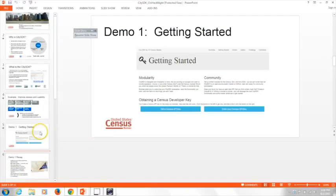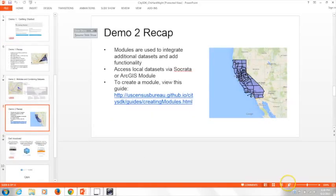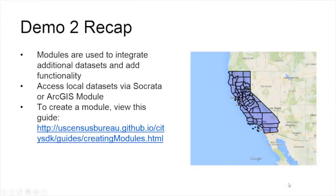Back to the slides for a quick recap. We looked at how you can use modules to integrate additional datasets into your project. If you're interested in local data, you can use the Socrata or ArcGIS modules provided. Or if you want to build your own module — which we invite you to do — you can look at the guide explaining how to create one. Once you build it, submit a pull request to the project and we can add it to our gallery showcasing all the modules built to date. We recommend hosting the module on your own GitHub repo for versioning control and ownership, then submitting a pull request to tie it into the project.